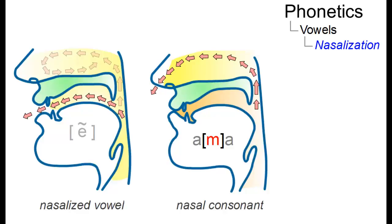To distinguish the notation of nasalized vowels from oral vowels, we add a diacritic to the vowel, the so-called tilde.